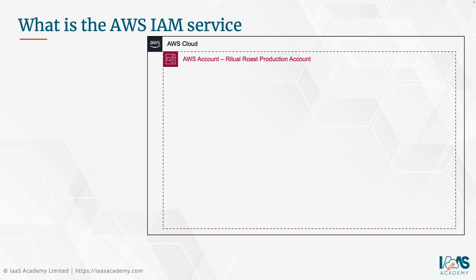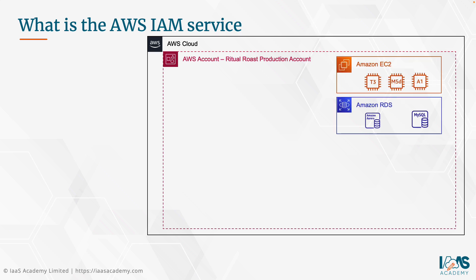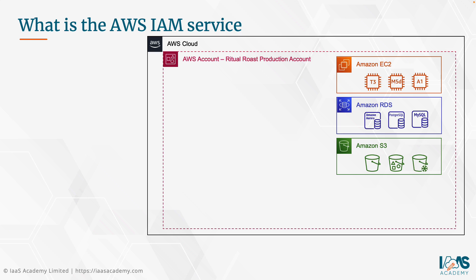Taking the example of our Richer Roast company, a coffee shop organization, assume they require services like compute, databases, and Amazon S3 storage. We would need a means to allow users to access these services. For example, Alice, our senior systems administrator, might need access to create EC2 instances, spin up S3 buckets, and so on. To allow that, we need to verify her identity and grant only the permissions needed to carry out her job function — that's known as the principle of least privilege.